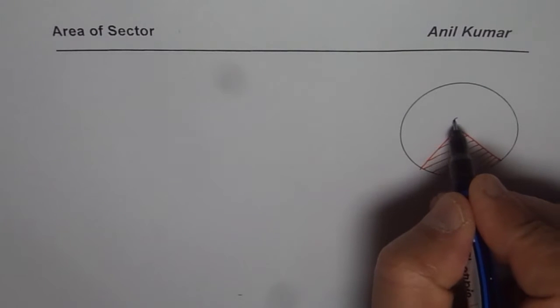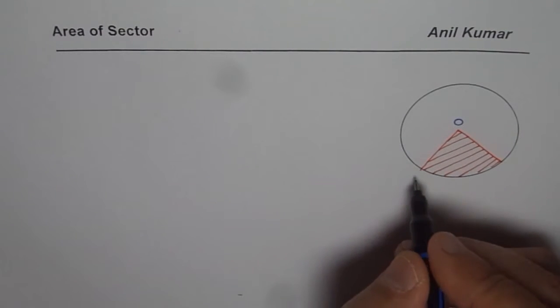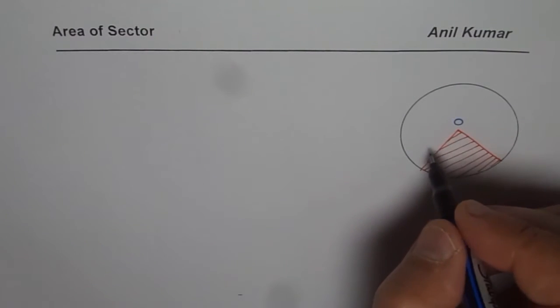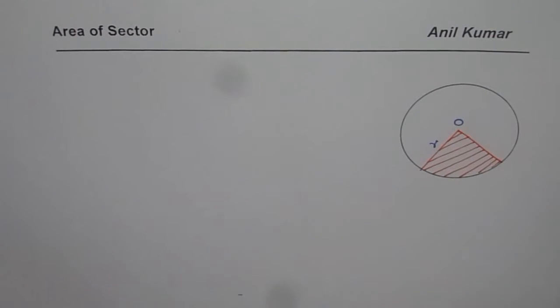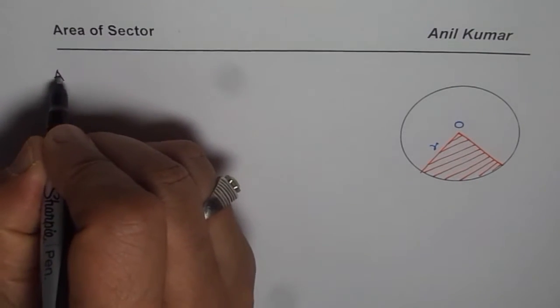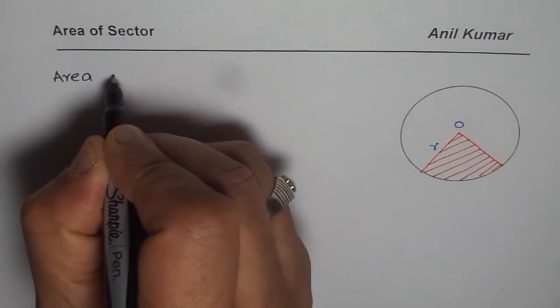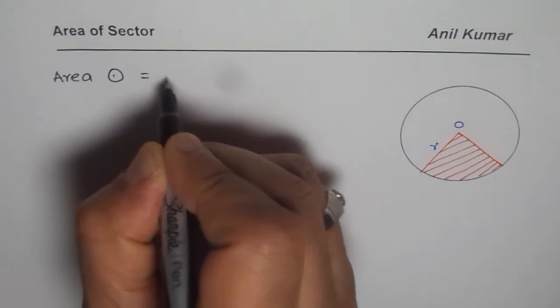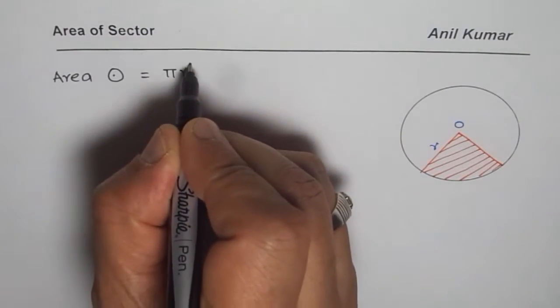Now we are interested in finding the area of this particular sector. Let's say this center is at O and the radius of the circle is R. We can have a general expression for the area of the sector. The area of a circle is equal to πR².